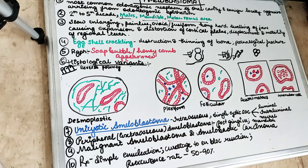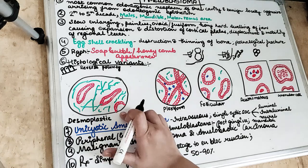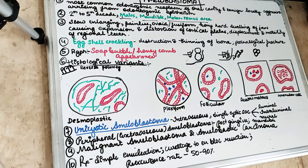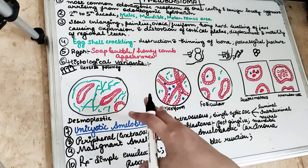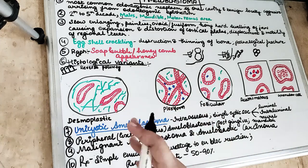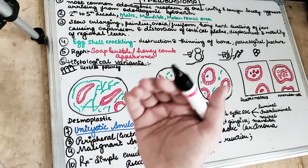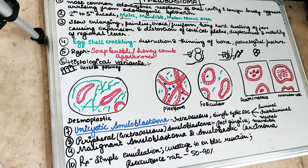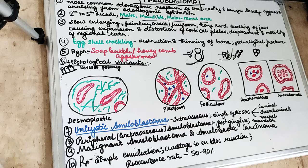We can also see pathologic fractures, and the involved tooth is vital. In the desmoplastic type, ameloblastoma is seen in the maxilla. When the lesion is too large, it can invade into the ethmoidal air sinus and even extend up to the cranial base.